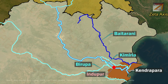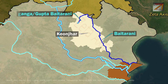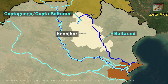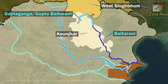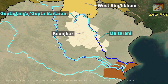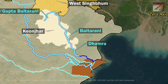Now let's discuss the Baitarani river. The Baitarani river rises near Dumuria village in the hill ranges of Keonjhar district of Odisha. The river is called Guptganga or Gupt Baitarani in the upper parts. The river originates and flows mainly in Odisha, but for a very small stretch it flows in West Singhbhum district of Jharkhand. The Baitarani is also called Dhamra in the lower parts of the river.